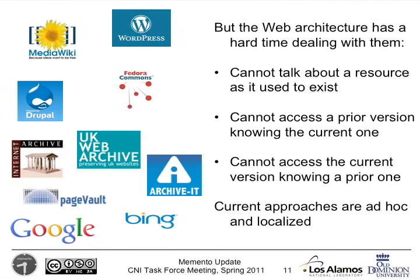If you know the current URI for a resource, you can't go from there automatically back to the prior state of the resource. And given a prior state of the resource, you can't get from there back to the one that it was an archive of. There are various approaches for this, but they're all very localised and ad hoc. The Internet Archive isn't a standard — it doesn't obey the rules of web architecture directly, and it's one centralised archive. So this is what we want to try and change.